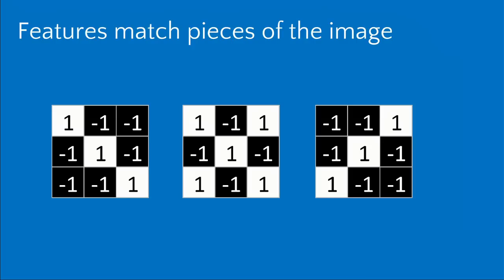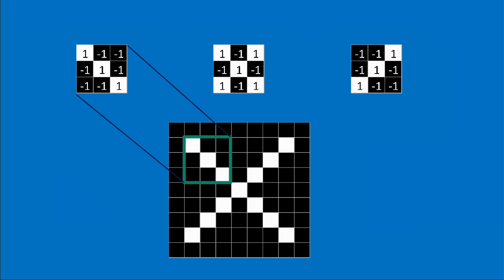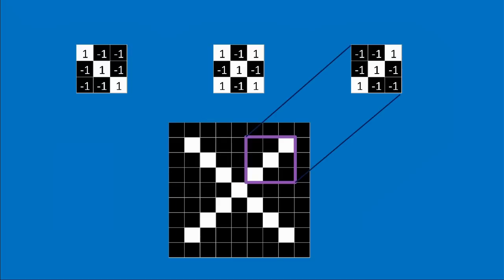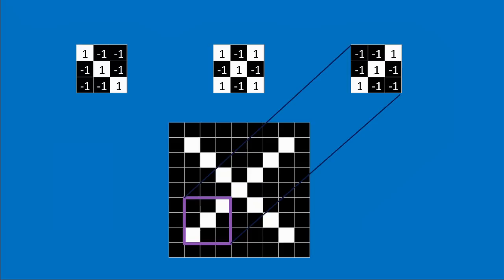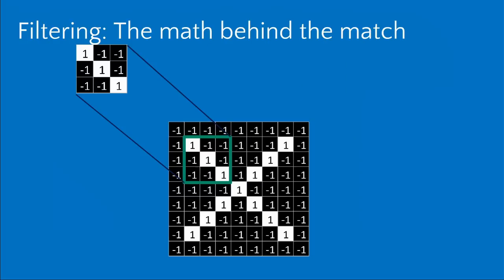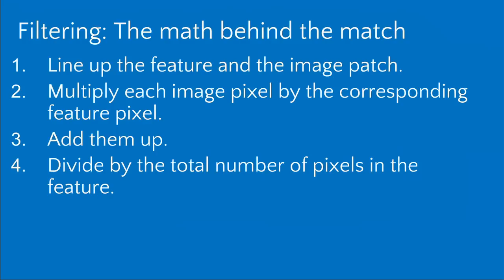These tiny pieces are called features. The one on the left looks like a diagonal arm of the X leaning left, the one in the middle looks like the center of the X where it crosses, and the one on the right looks like a diagonal arm leaning right. You can see how these different features match different patches within the overall image. The math behind finding this match — applying features — is called filtering.